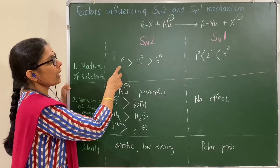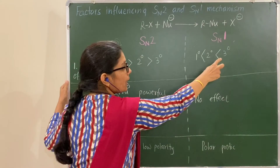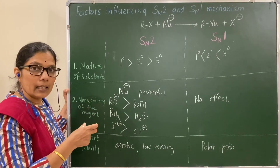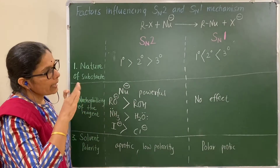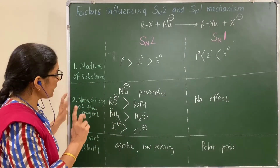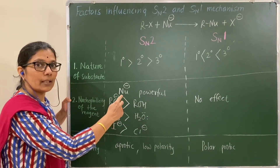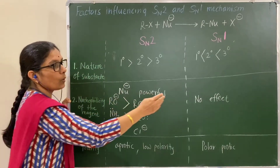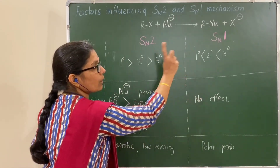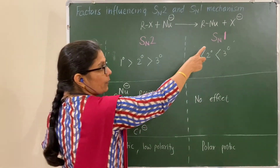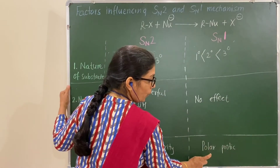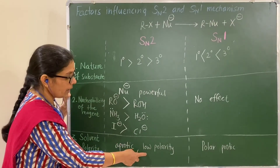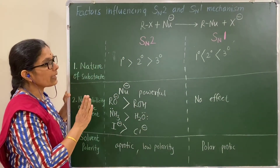Summary: primary alkyl halide follows SN2 mechanism; tertiary alkyl halide favors SN1 mechanism; secondary alkyl halide can undergo both SN1 and SN2. A more powerful nucleophile favors SN2; nucleophile has no effect on SN1. SN1 proceeds rapidly in polar protic solvents, while aprotic or low-polarity solvents favor SN2.